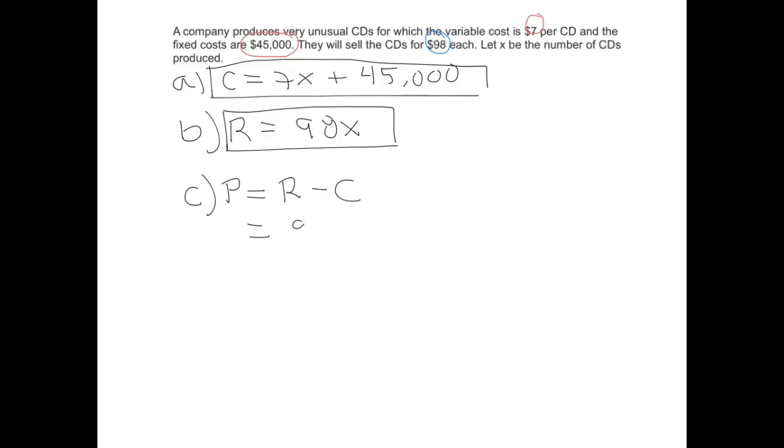So in this case, then, revenue minus cost is going to be 98X minus, and then we'll put parentheses, 7X plus 45,000. So we're going to have to actually distribute the negative. 98X minus 7X.